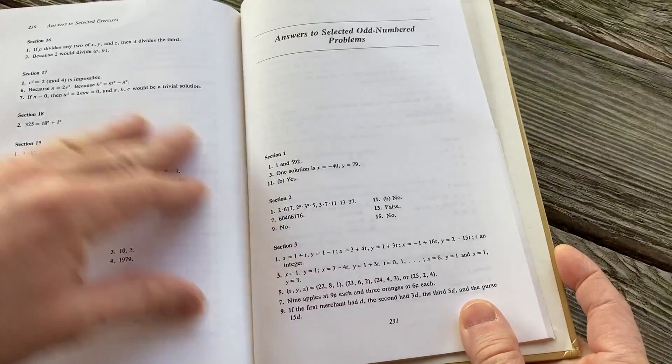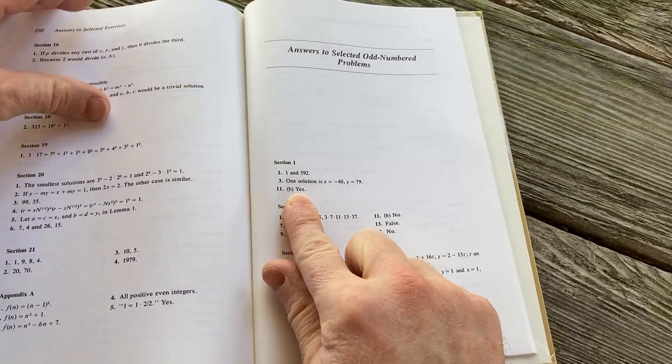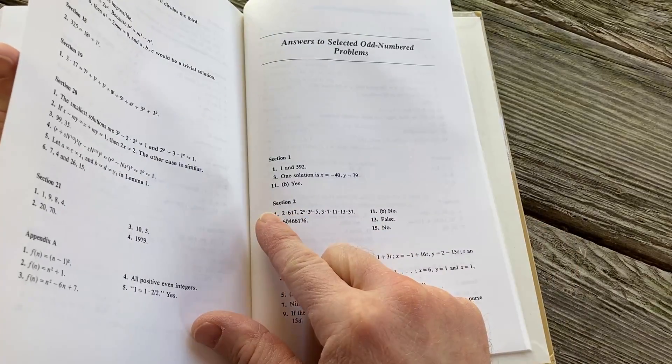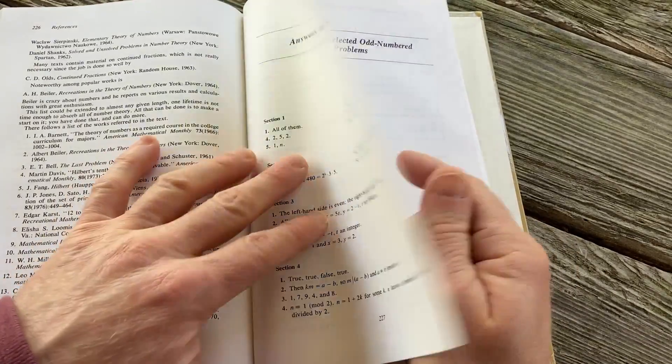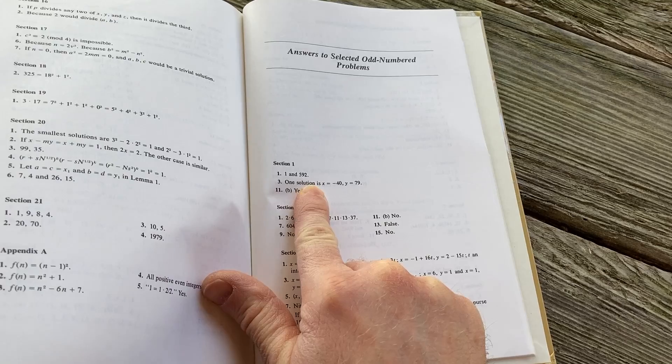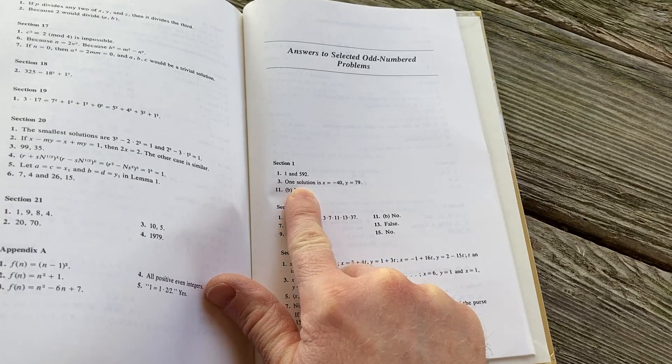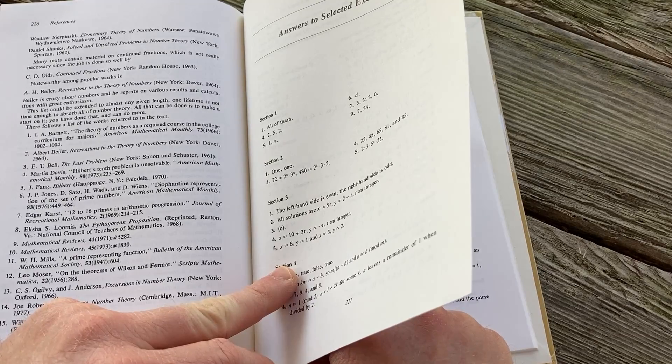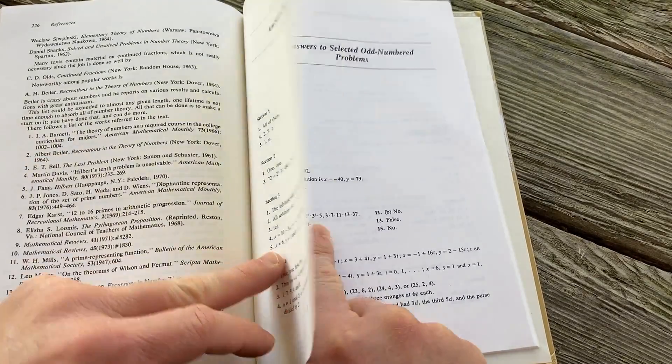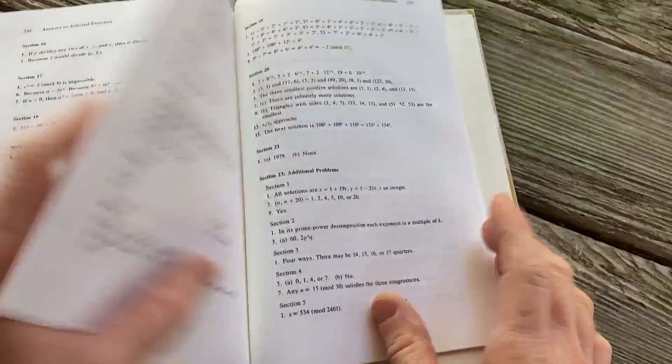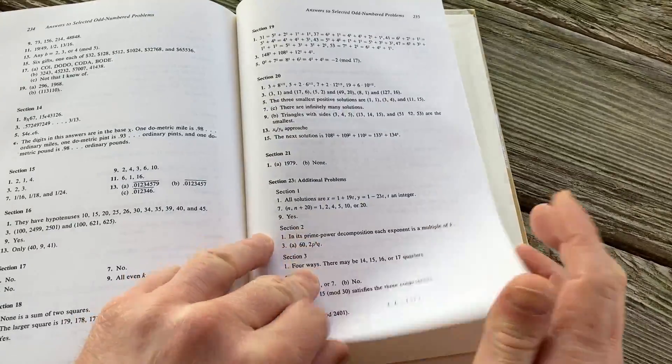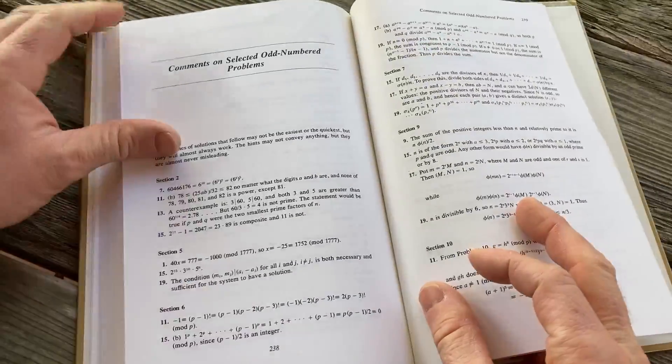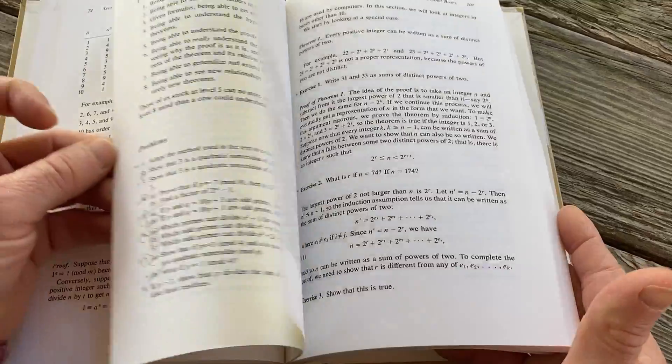And then answers to selected odd numbered problems. So let's see, 1311. So here it says, yeah, this is 1 and 592. So it's a little bit different. And then here we have, let's keep going. Comments on selected odd numbered problems. So you have all kinds of help in the back of the book here for the exercises.